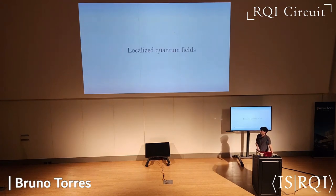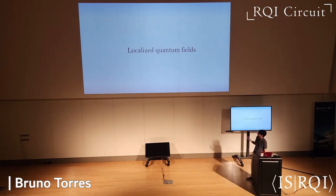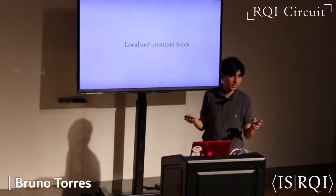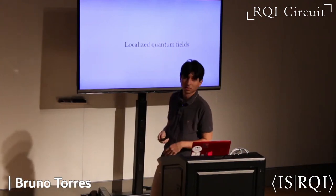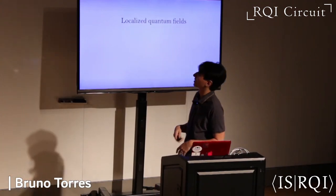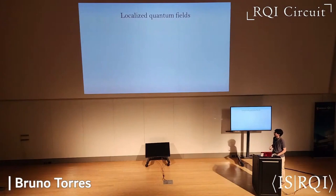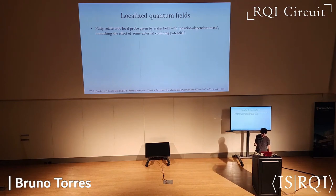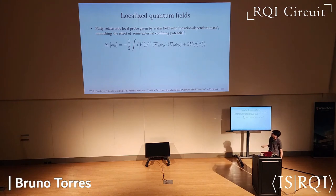The toy example of a fully relativistic probe is what we've been calling a localized quantum field — the easiest example of something that satisfies the basic constraints of a local probe in RQI and is also a quantum field. The idea is to take some quadratic field theory with an external potential that acts like a position-dependent mass term. I'm writing the total action of the probe as something like this, where U is some external potential that can depend on spacetime.